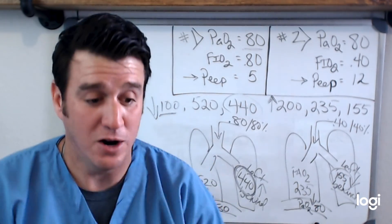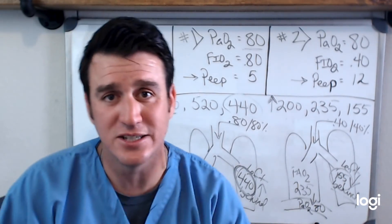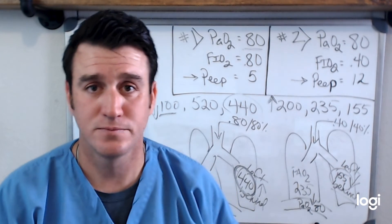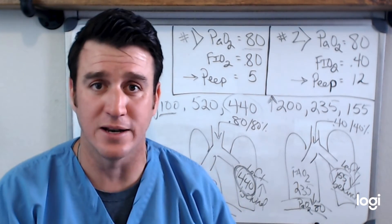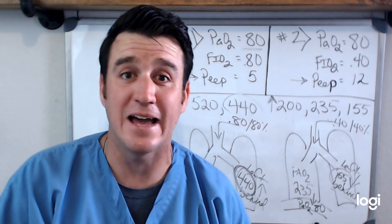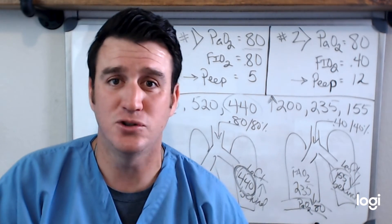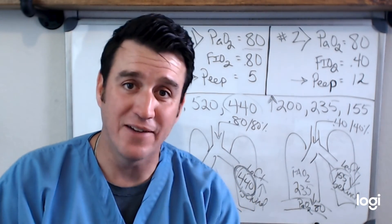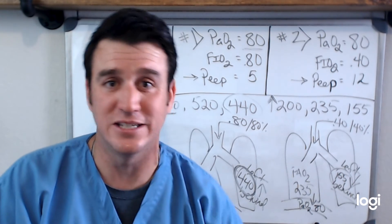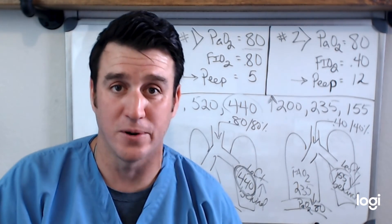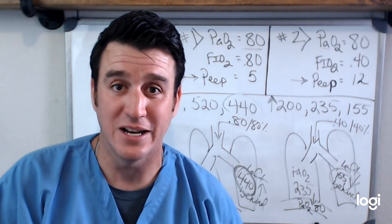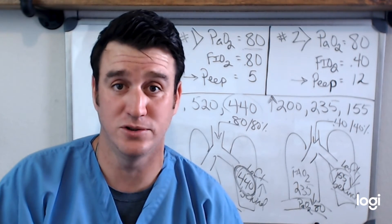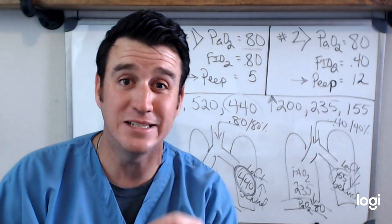Understanding that just because your PaO2 is normal does not mean you're oxygenating your patient efficiently — there are probably better ways to do it. Don't just throw four or five liters nasal cannula on a patient and think you're done. You've got to think deeper, down to the smaller details. Anybody can put a patient on a five-liter nasal cannula. Not everybody can tell you it's Dalton's Law that explains how increasing FiO2 increases alveolar partial pressure of oxygen, which improves arterial oxygenation. That's why you're becoming a respiratory therapist.